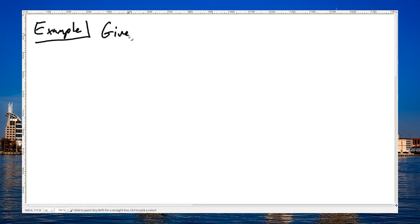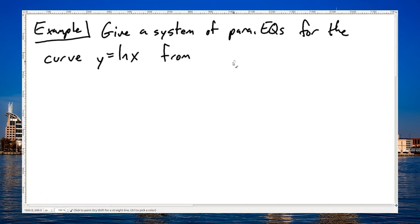Alright, give a system of parametric equations. And they should be representing the curve y equals the natural log of x. And we only want the portion of that curve between the points (1, 0) to (e squared, 2).